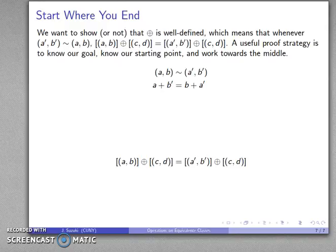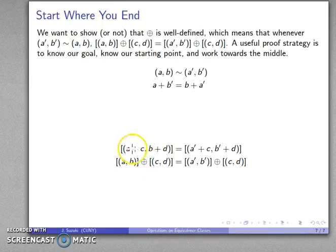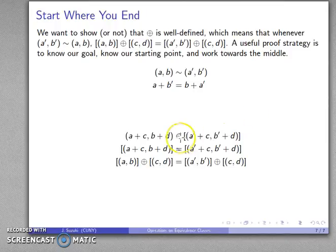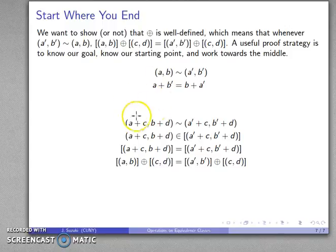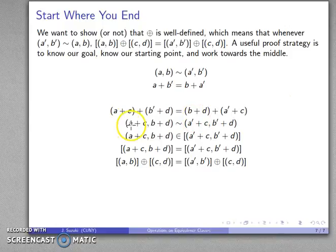Now let's work the other end. By our definition of the sum, [(A,B)] + [(C,D)] = [(A+C, B+D)] and [(A',B')] + [(C,D)] = [(A'+C, B'+D)]. If two equivalence classes are equal, the representative must be in the other equivalence class — so (A+C, B+D) must be equivalent to (A'+C, B'+D). By our equivalence relation definition, the outer sum must equal the inner sum: (A+C) + (B'+D) = (B+D) + (A'+C).